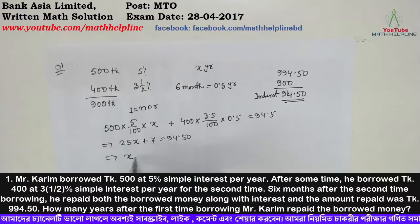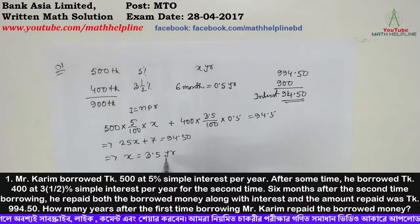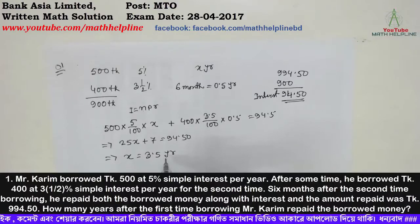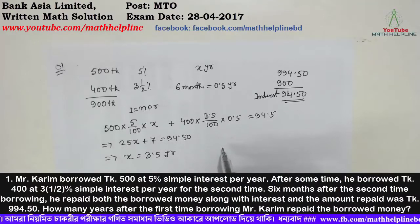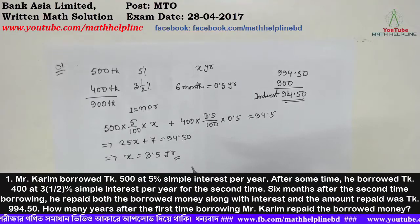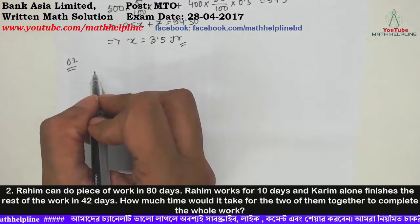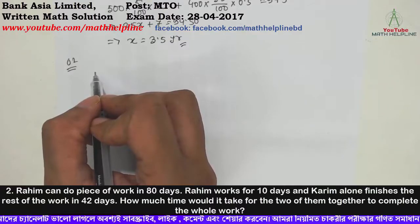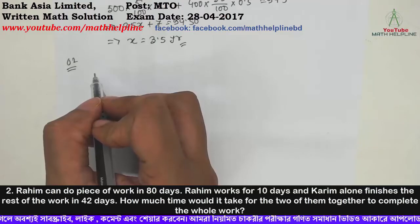After calculation, x equals 3.5. That means 3.5 years is the answer to what was asked: how many years after the first time borrowing did Mr. Corim repay the borrowed money? He repaid after 3.5 years.